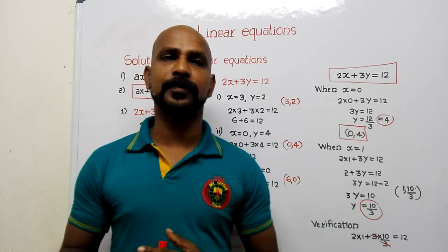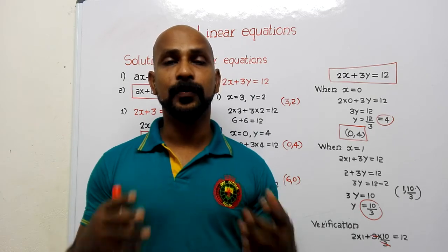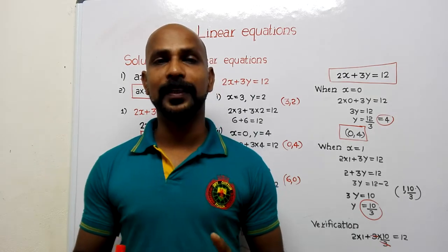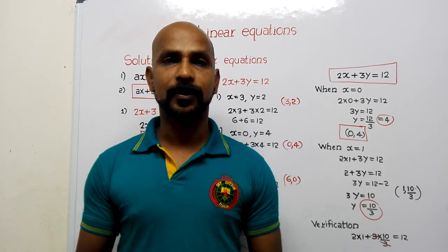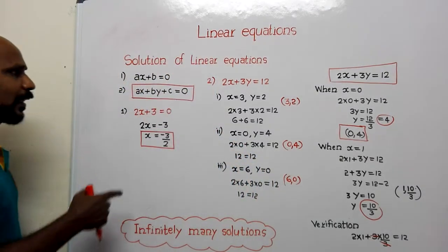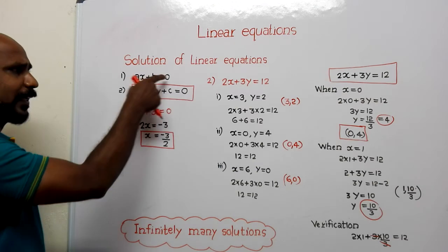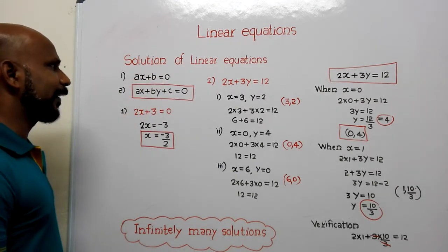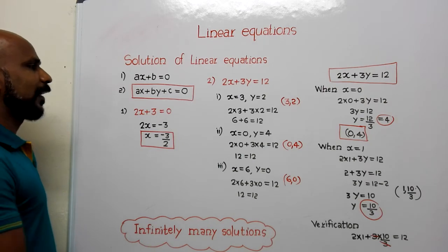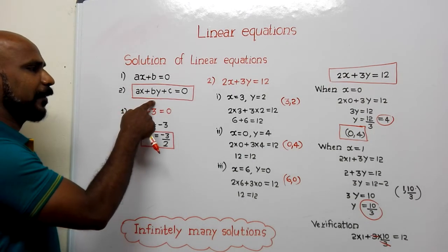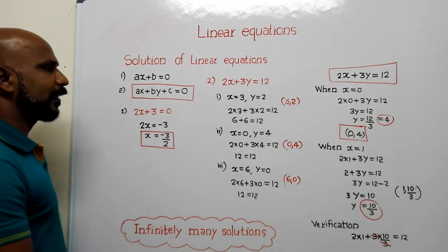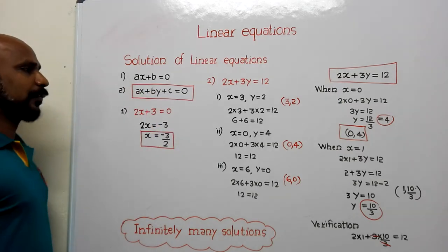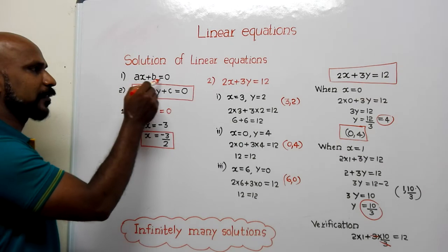In this session we are going to study how to find out the solution of linear equations in two variables. We already know how to find the solution of linear equations in one variable. So you see here: ax plus b equal to zero is the standard form of linear equations in one variable, and ax plus by plus c equal to zero is the standard form of linear equations in two variables.